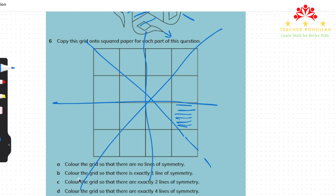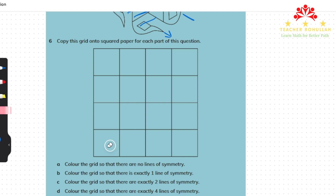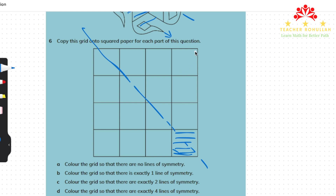Part B says: color the grid so that there is exactly one line of symmetry. If we color two matching squares along the diagonal from bottom right to top left, we have exactly one line of symmetry along that diagonal. We will not have any other lines of symmetry because the other diagonal does not have matching shading on both sides.